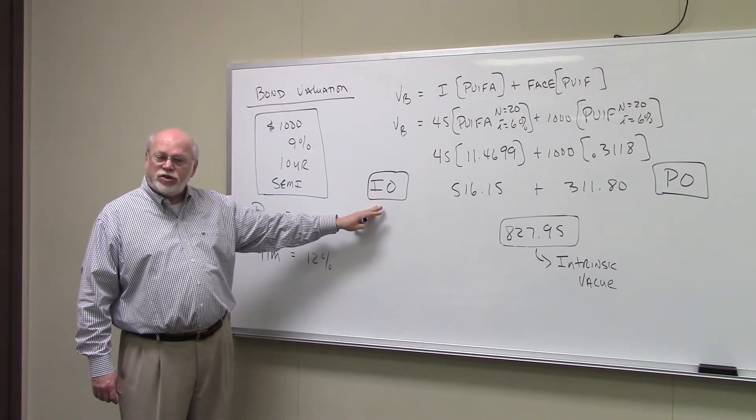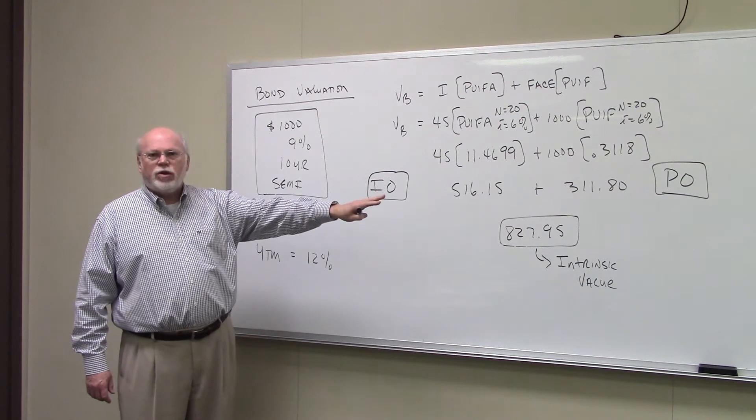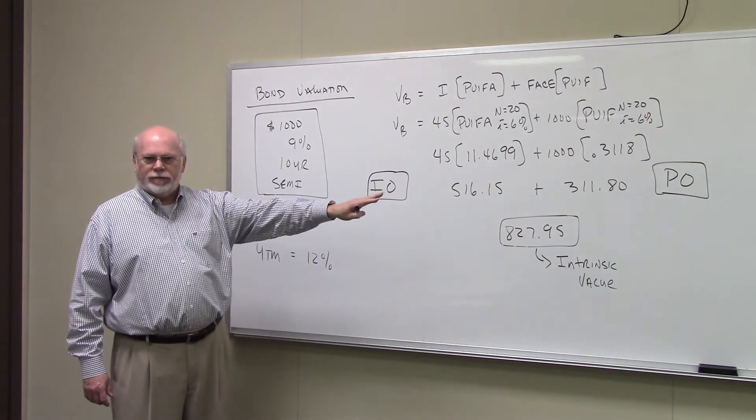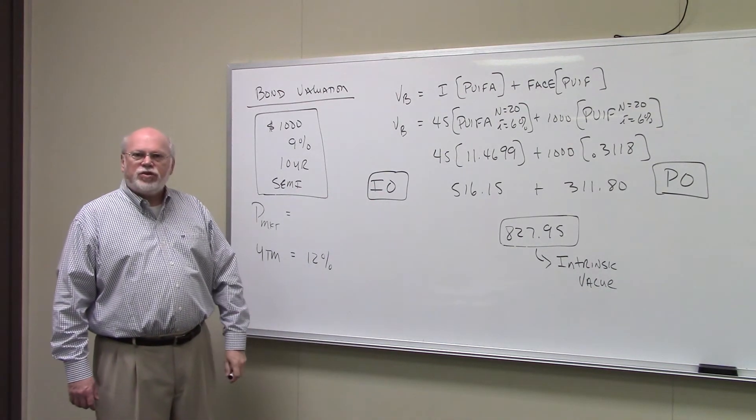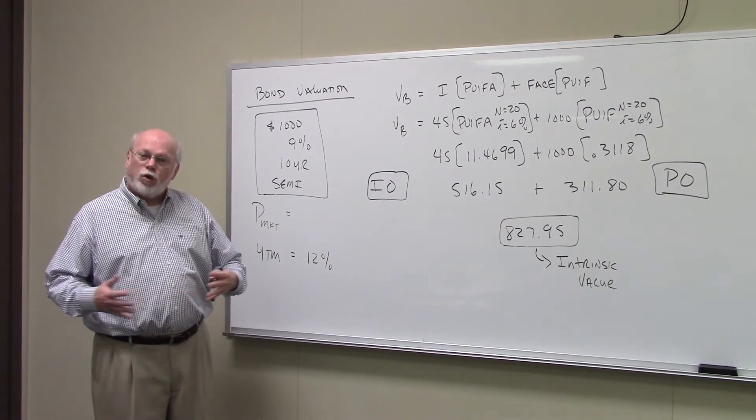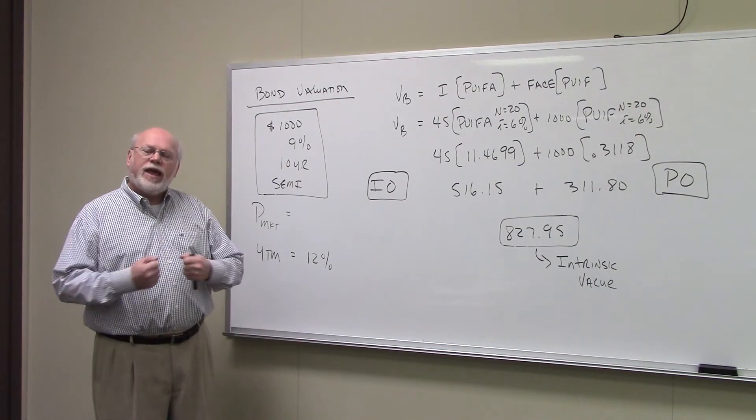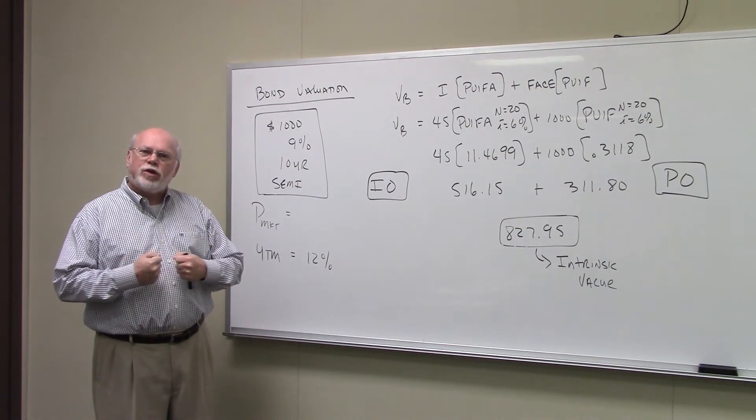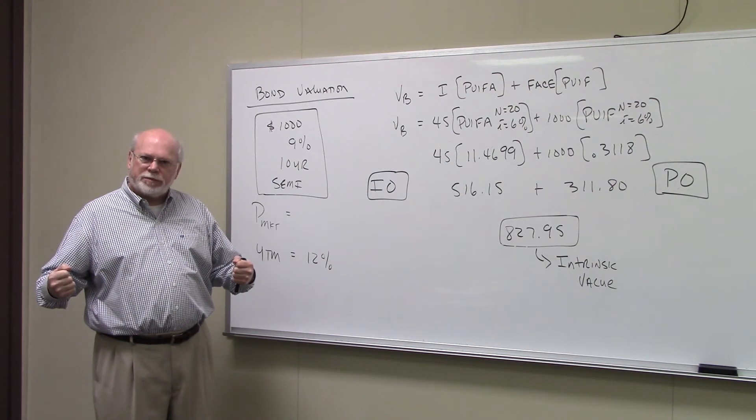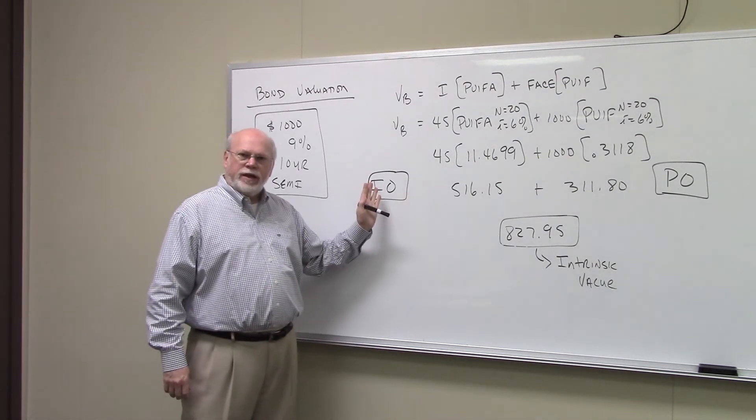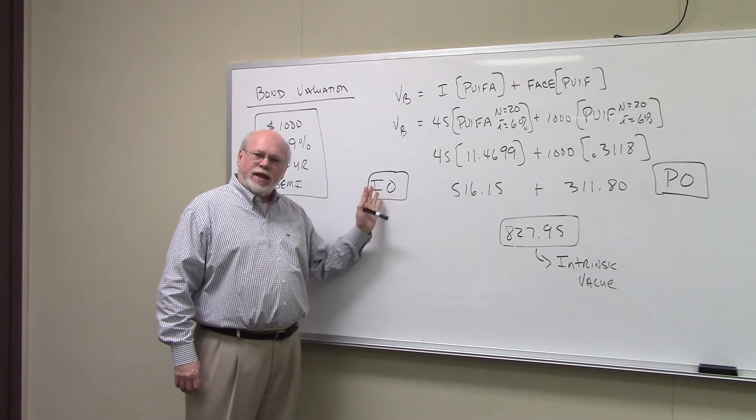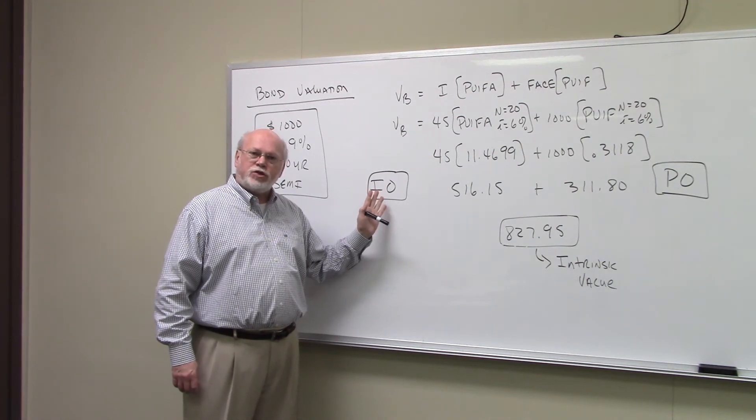I-O stands for interest-only. P-O stands for principal-only. And again, these two things would be from a normal bond, a traditional bond. And the investment company does what they call strip the bond. These are called strips. And they're stripping the cash flows, basically. And so they sell to one investor the interest portion of the bond, sell to the other investor the principal portion of the bond.